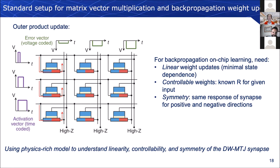For on-chip backpropagation learning, there are three essential things we need from these synapses. First, we need linear weight updates — minimal state dependence on what resistance state the device is at when we change its weight. Second, we need controllable weights — for a given input, we want to know what resistance state it will go to. Third, we want symmetry — the same response of the synapse for positive and negative directions of input. We used a physics-rich model to understand how to control the linearity, controllability, and symmetry of the Domain-Wall MTJ synapse.